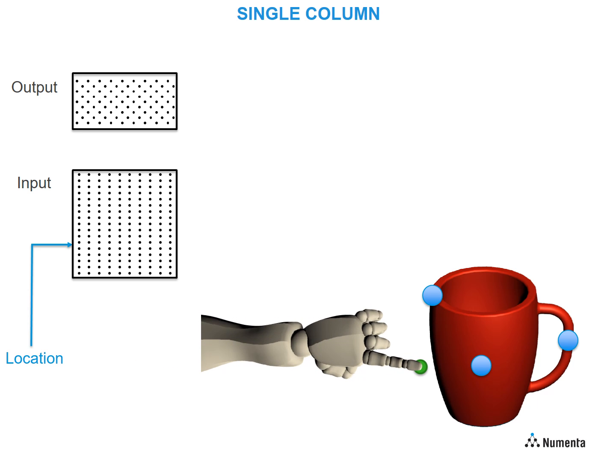As the finger moves towards the first point, a location signal is generated, representing where it's going to touch on the cup. The location signal depolarizes the set of cells whose distal dendritic segments match this location.